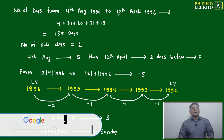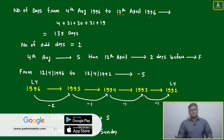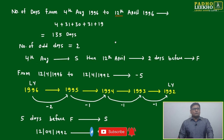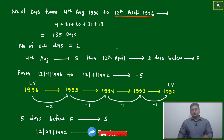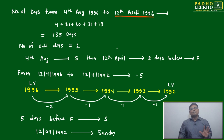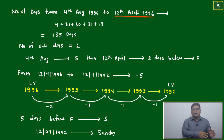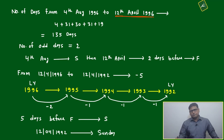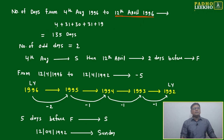We will calculate the number of odd days from 4th August 1996 to 12th April 1996. We calculate 12th April 1996 first because the question asks for 12th April 1992 — so first we find 12th April 1996, then move year by year, which makes calculation easier. We could also go from 4th August 1996 to 4th August 1992, but to avoid mistakes, we go to 12th April 1996 first, then step to 12th April 1992.